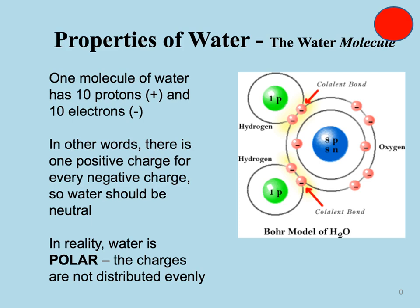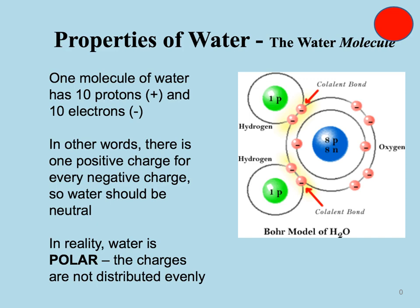So if you look at the number of protons and the number of electrons, it should be basically neutral because there are equal protons and equal electrons — but that's not what happens. That's what makes water kind of unique. Because the electrons are not equally distributed between the molecule, the water molecule is what we call polar. Polarity means uneven or unequal distribution of charge.